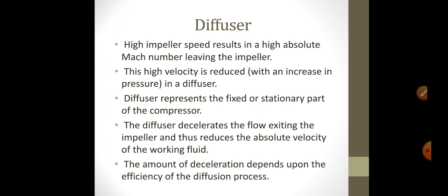High impeller speed results in high absolute Mach number leaving the impeller. This high velocity is reduced with an increase in pressure in the diffuser. The diffuser represents the fixed or stationary part of the compressor. The diffuser decelerates the flow exiting the impeller, thus reducing the absolute velocity of the working fluid. The amount of deceleration depends upon the efficiency of the diffusion process.